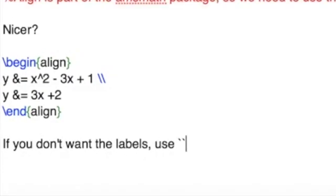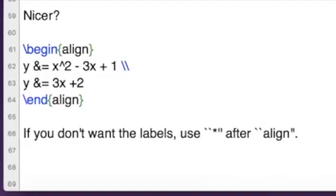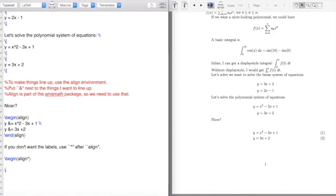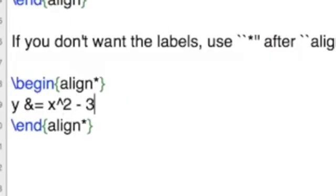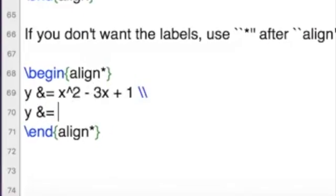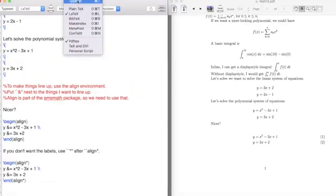Then you can put asterisk after align. And so that would look like, so begin align, and after the align, you throw on the asterisk. Then I have y ampersand equals x squared minus 3x plus 1. y ampersand equals 3x plus 2. Typeset that.